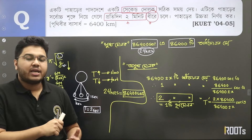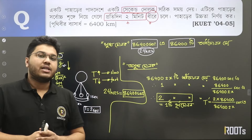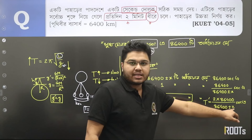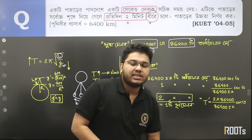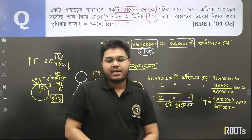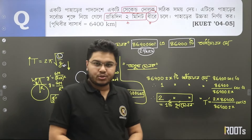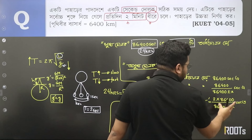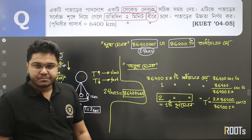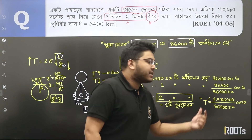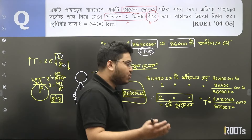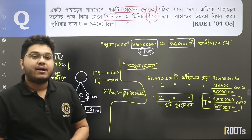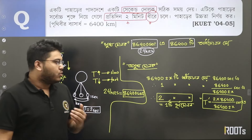দুইবার অর্ধ দোলন দিলে একটা পূর্ণ দোলন হয়ে যায়। সেকেন্ড দোলকের প্রকৃত দোলনকাল যে দুই সেকেন্ড তানা, এখানে সামান্য কম বেশি আসি — একারণে যদি বেশি হয়ে যায় নিচে টার্মটা, তাহলে এখানে বড় থাকবে, এখানে ছোটো থাকবে।